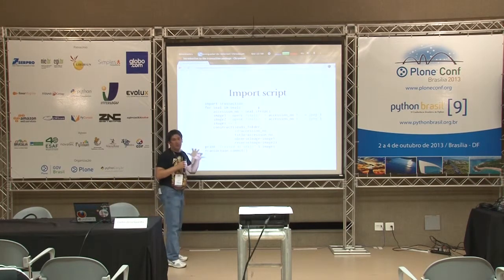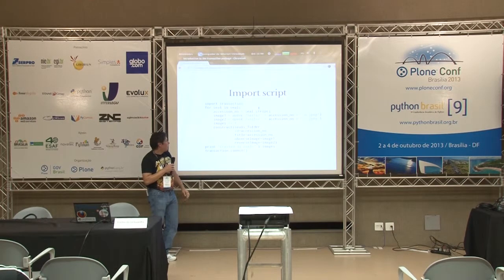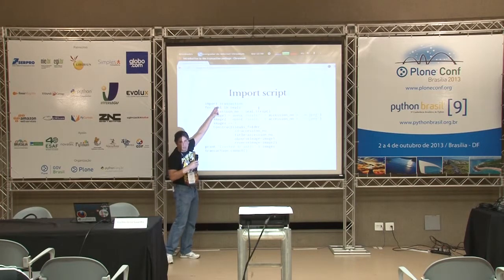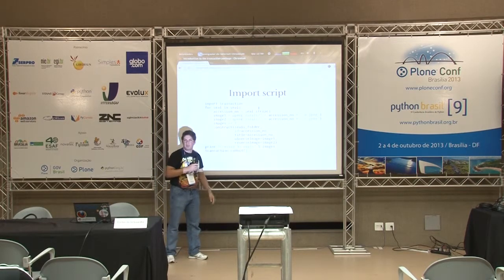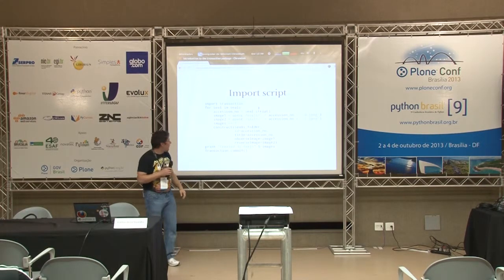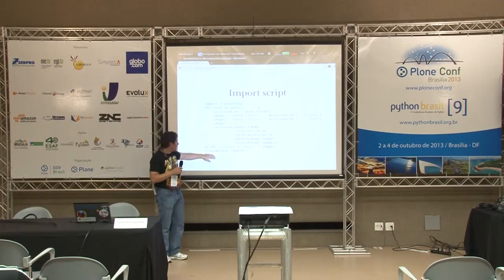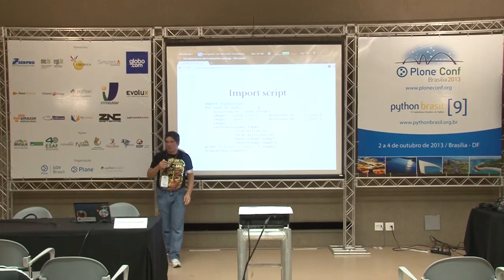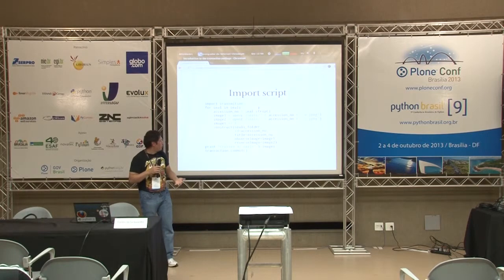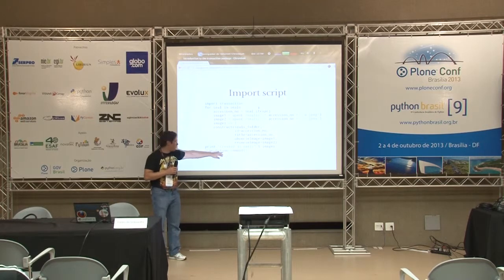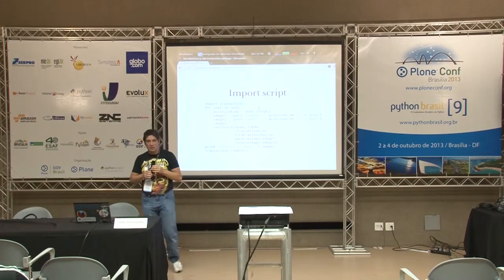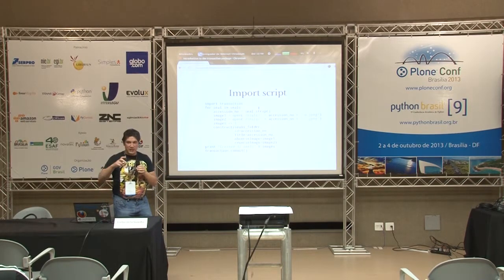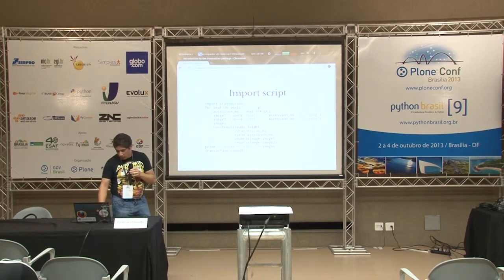If you write your own import script instead of using transmogrifier, you can also use transaction directly — just import it. Whenever you want to commit something, just say 'transaction.commit()' and that's it — it's saved in the database. If you're running a script with a live Plone site and you forget this part, nothing will be saved. So when you are actually interacting with Plone at that level, it's really important to have transactions. But as you can see, it's very easy to use — just import transaction and use 'transaction.commit()' when you want to commit, or 'transaction.abort()' if something bad happens.